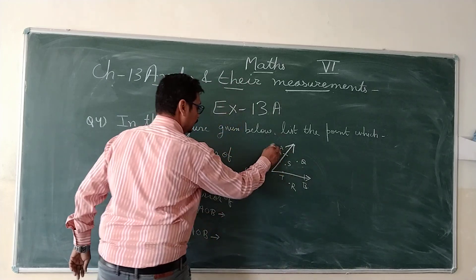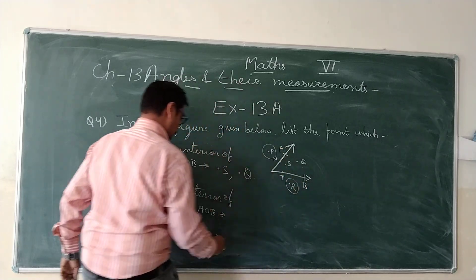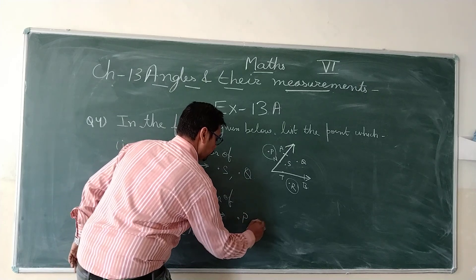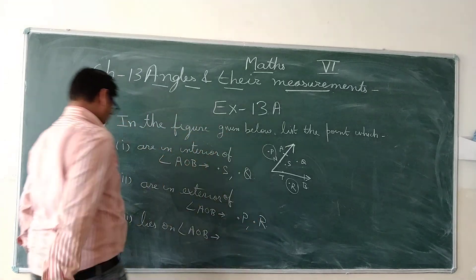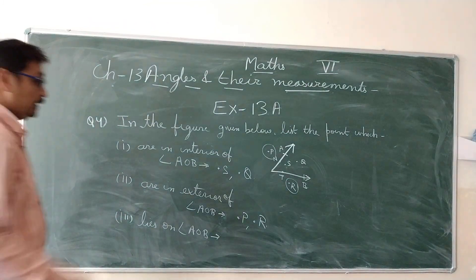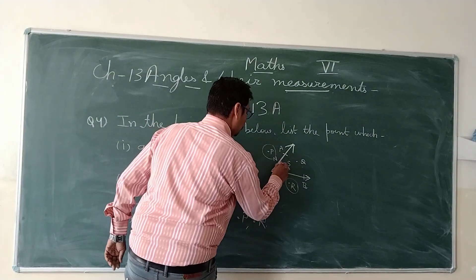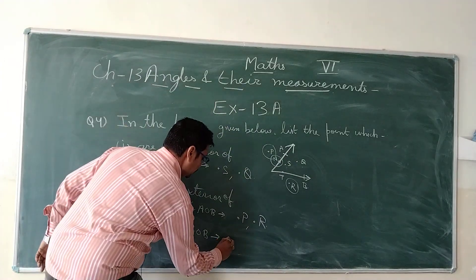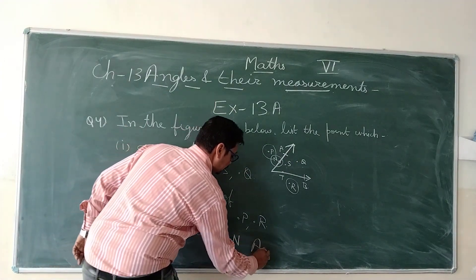There are two points, point P and point R. So this is point P and point R lies on angle AOB. Point T. This is the only point which lies on it. So this is point N. These are the answer.